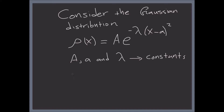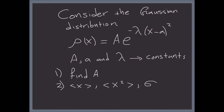First, we have to find the normalization constant A. Then we have to find the expectation value of x, the expectation value of x squared, and the standard deviation sigma. And finally, we have to sketch the probability density rho of x.